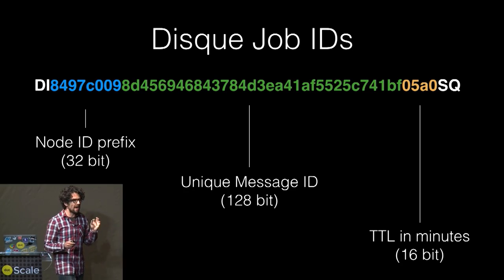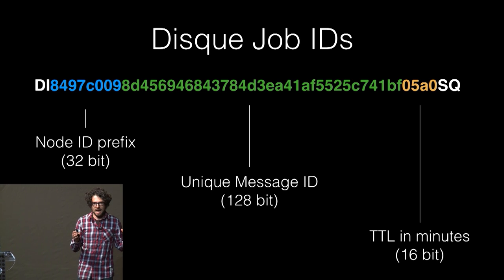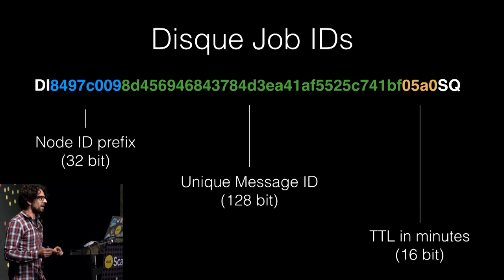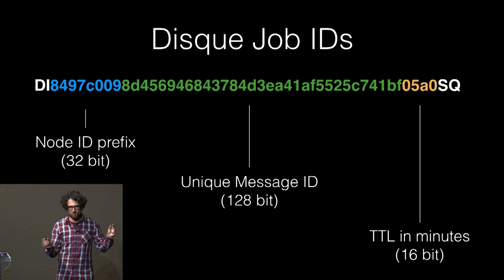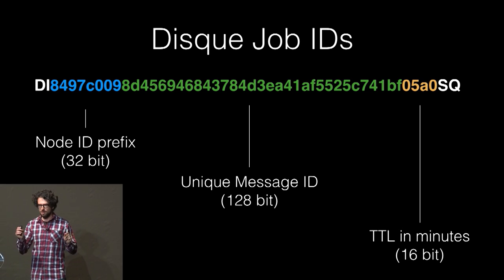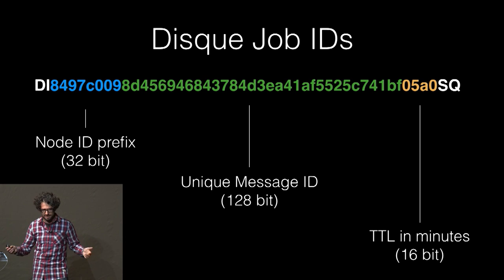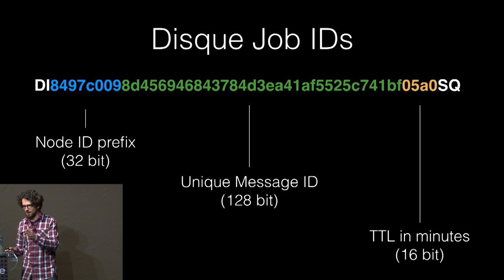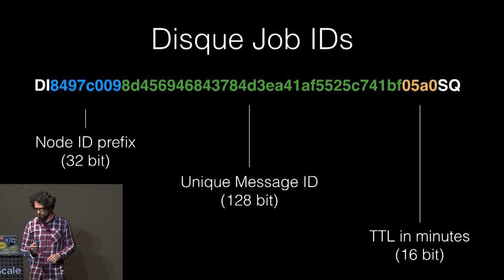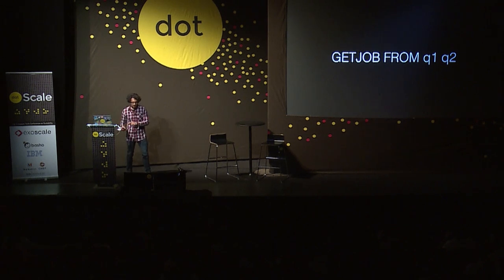What you get in reply to ADDJOB is the name of the job — its ID. The ID is a very long string. There are two characters at the start and two at the end used for humans to recognize it as a Disque ID, and for sanity checks on the server side — so if you send garbage, it immediately says this is not a valid ID. Then there is a reference to the node ID, and then a unique message ID that's a large random value to avoid collisions. So our message was originated from the client, reached the cluster, and was created inside the cluster.